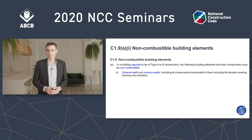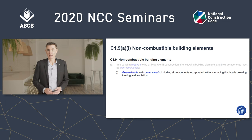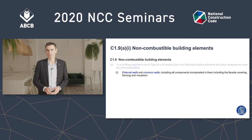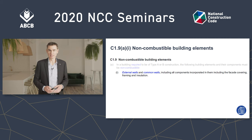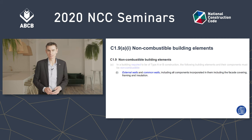C19A requires a number of elements in type A or type B buildings to be non-combustible, and the first of these is: external walls and common walls, including all components incorporated in them, including the facade covering, framing and insulation.